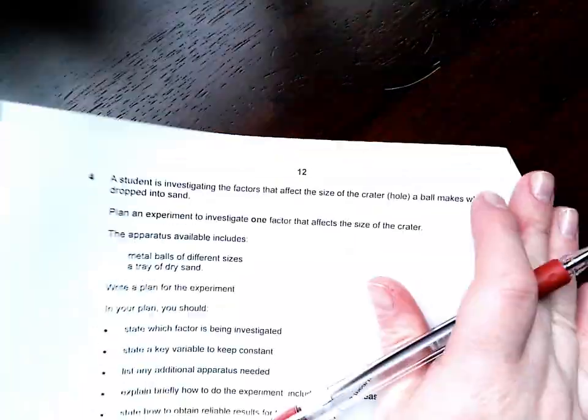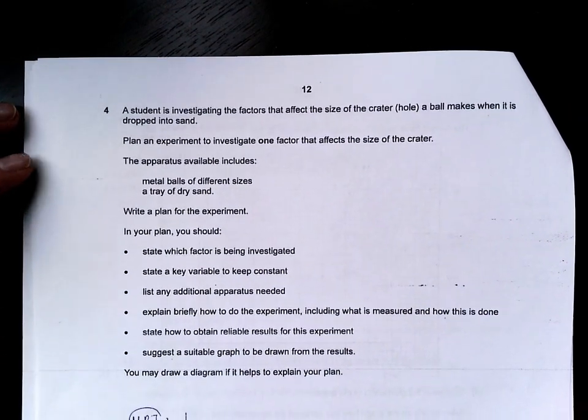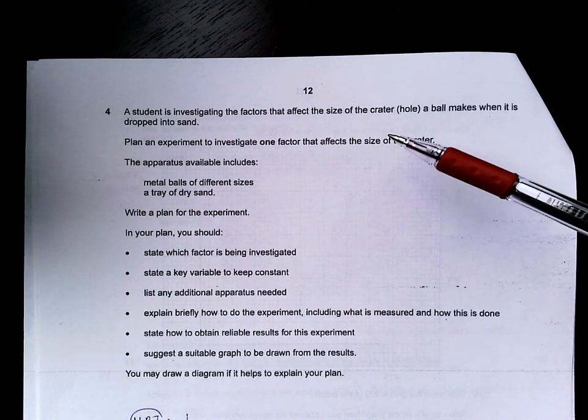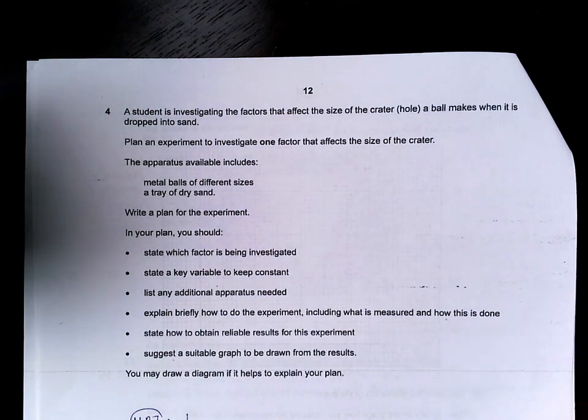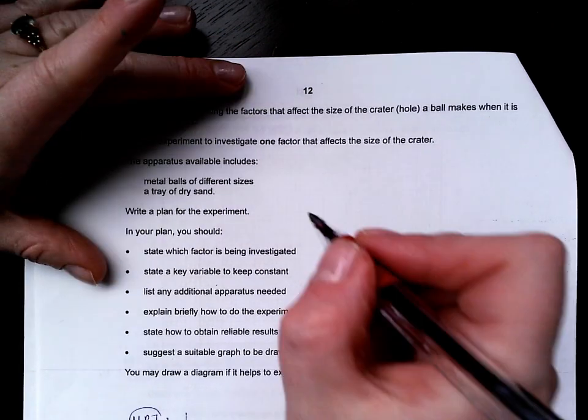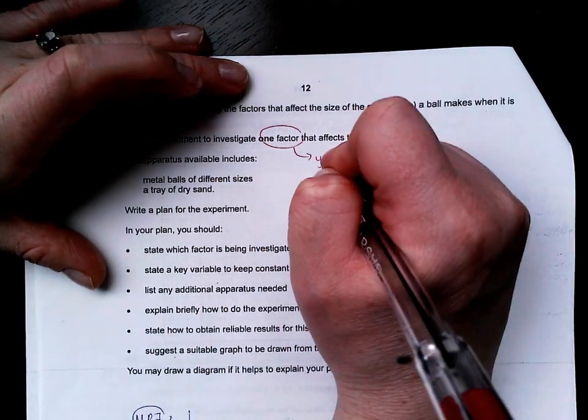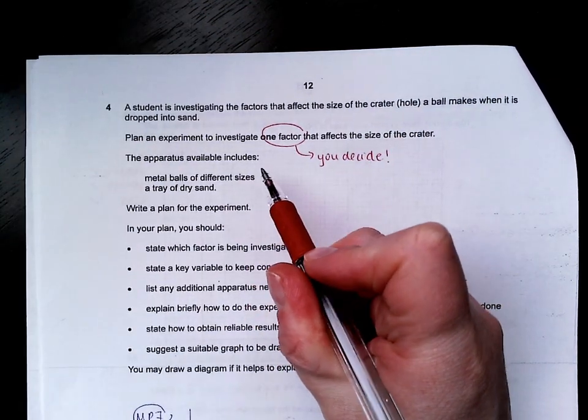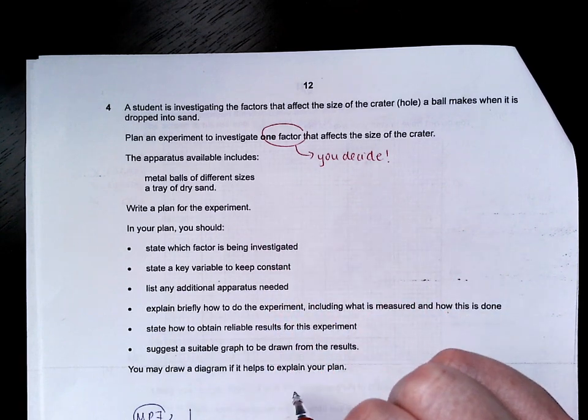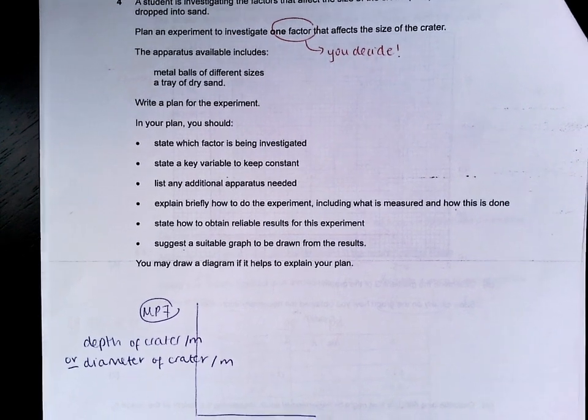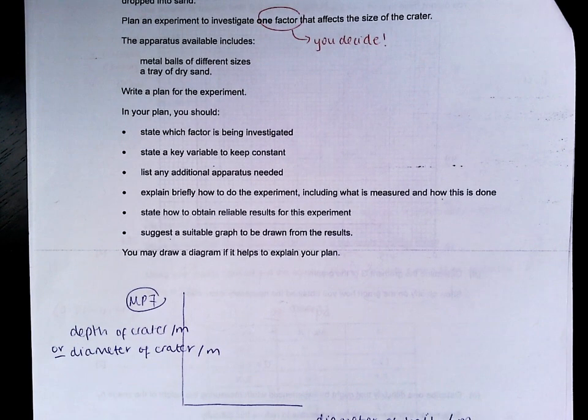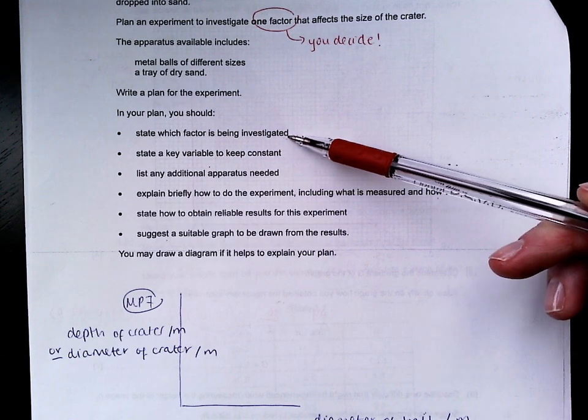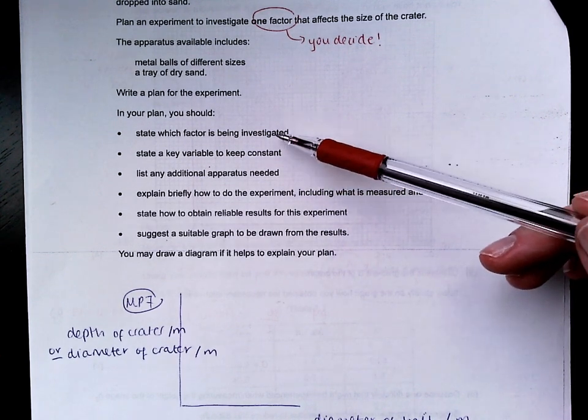Last but not least, not badly done on the whole, but still things that definitely need fixing collectively. A student is investigating the factors that affect the size of the crater, the hole, that a ball makes when it is dropped into sand. Plan an experiment to investigate one factor, that's a big clue that you decide, that affects the size of the crater. Write a plan. We know the plan is worth seven. We know that the mark scheme follows the same pattern every single year.